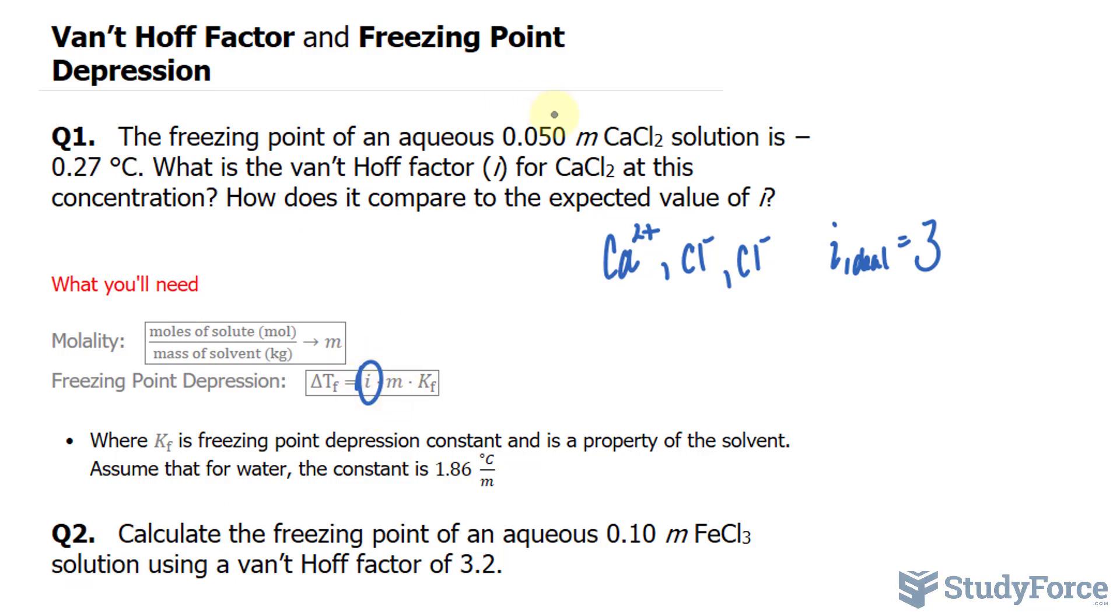We already have the molal amount, and it's shown right there. The constant for water is 1.86, and that's given right here. And the change in temperature is given as 0.27. So all we have to do is rearrange for i. Let's go ahead and do that.